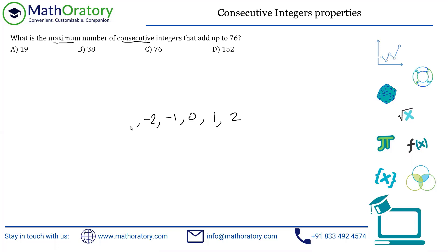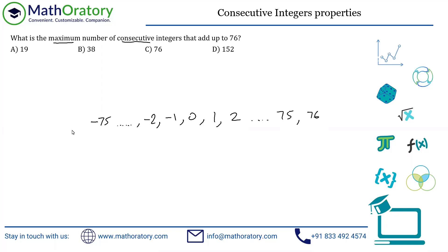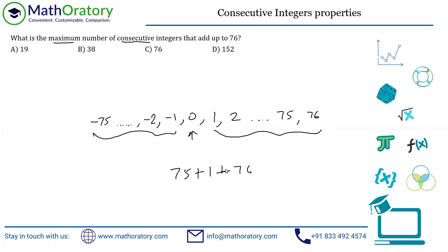The idea is simple: take up to minus 75 on the negative side and up to positive 75 — this entire block adds up to zero. Then you just take 76 without taking minus 76. So with this part being zero, the total sum equals 76. Now just count: there are 75 negative numbers, one zero, and 76 positive numbers — a total of 75 plus 1 plus 76, which equals 152.